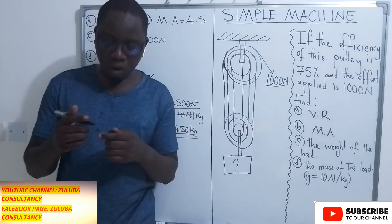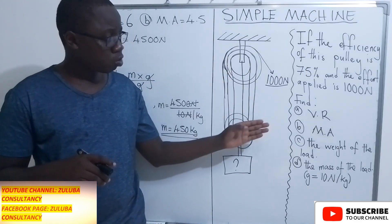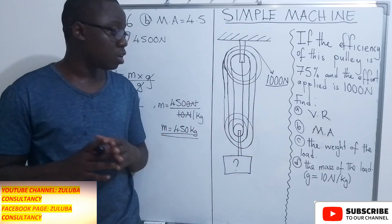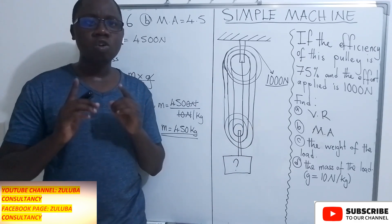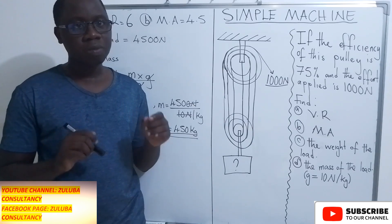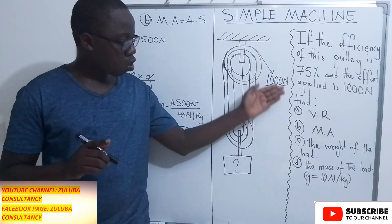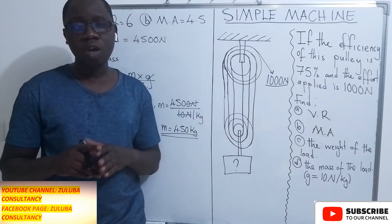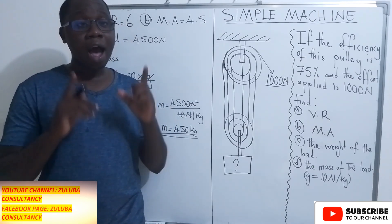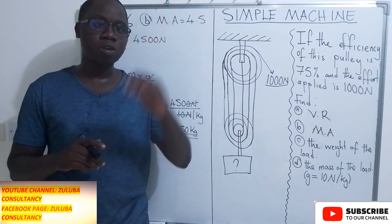Hopefully this video has been very helpful for you to know how to find the velocity ratio, the mechanical advantage, the weight, and the mass. You can also notice that these four questions are interlinked — if you fail to do the first question correctly, it affects all the other questions. Thank you so much for watching. Do not forget to subscribe to our YouTube channel and follow us on our Facebook page for this and more videos. Bye-bye.